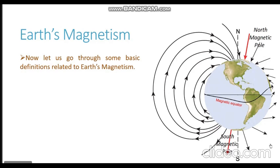Another diagram showing the earth's magnetism: the north magnetic pole is the place where the red arrow is pointing into the surface of earth, and the point where the red arrow comes out is the south magnetic pole. The geographic poles are also shown — the dotted line represents the axis, with the geographic south pole at the bottom, and this point at the top represents the north geographic pole.